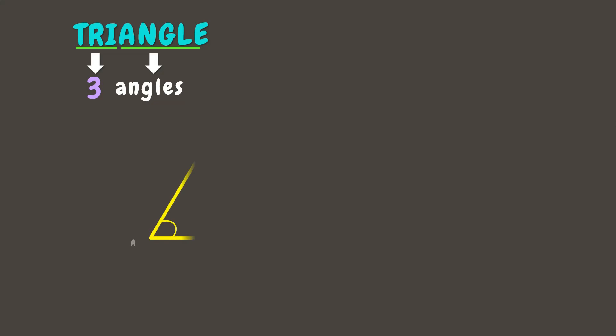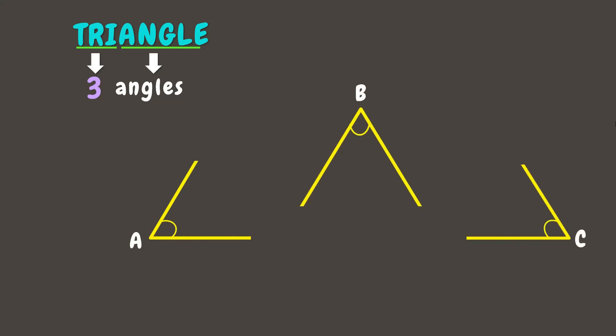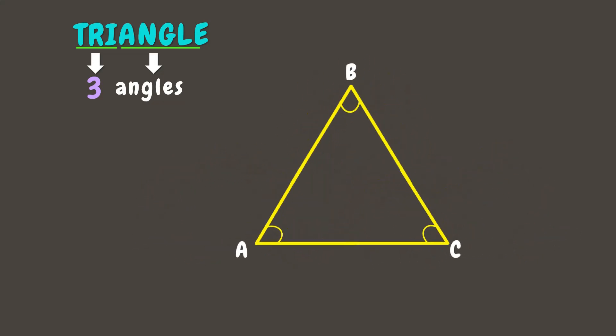A triangle is a polygon formed by three angles. Let's say we have angle A, angle B, and angle C. If we join these angles together, we can form a triangle. We can name a triangle using its vertices. This triangle has vertices B, A, and C, so we can name it triangle ABC. You can also mix the vertices and name it triangle BAC, CBA, or any combination of the vertices.